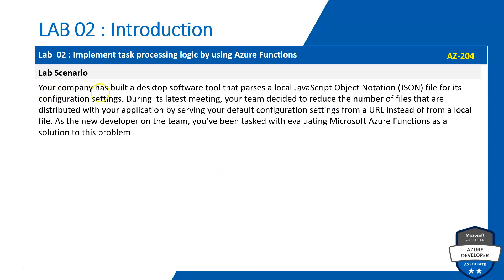The lab scenario: your company has built a desktop solution tool that parses a local JSON file for its configuration settings. During its latest meeting, your team decided to reduce the number of files distributed with your application by serving default configuration settings from a URL instead of a local file. As the new developer on the team, you have been tasked with evaluating Microsoft Azure Functions as the solution to this problem.